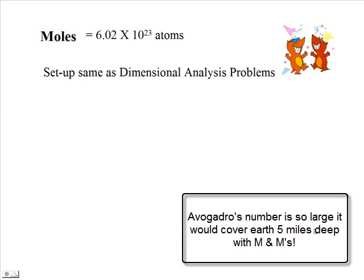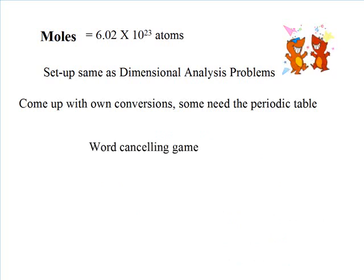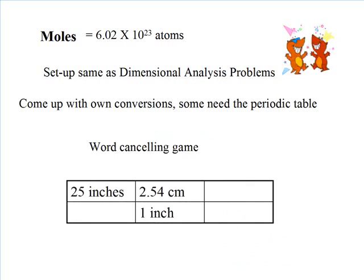This setup using moles is the same as dimensional analysis problems. Many of these conversion factors you'll have to come up with on your own using a periodic table. It's a word canceling game. Remember when you were given 25 inches in dimensional analysis, you had to find a conversion factor so the words would cancel out. It's done the same way, except you won't be looking these up in the back of the book. You'll have to come up with these conversion factors yourself.